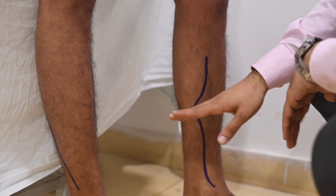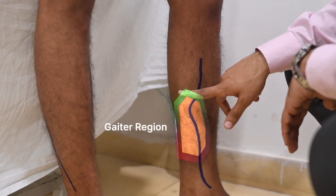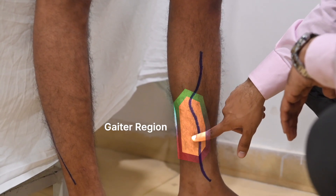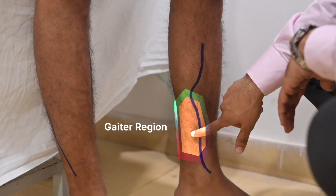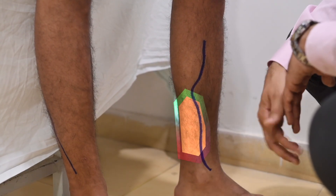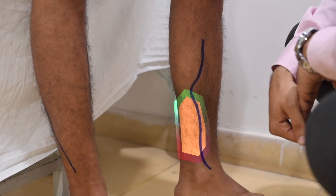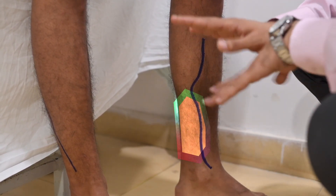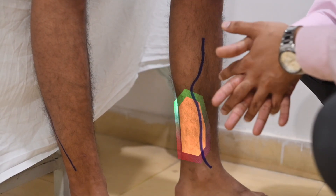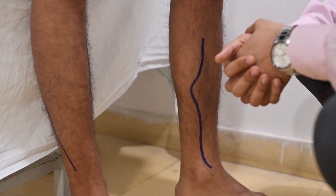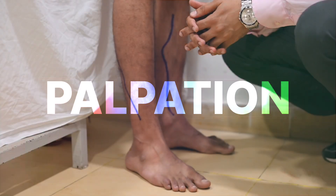This gaiter region needs to be examined carefully because it can have venous ulceration. On inspection, these are the findings that we will look at.